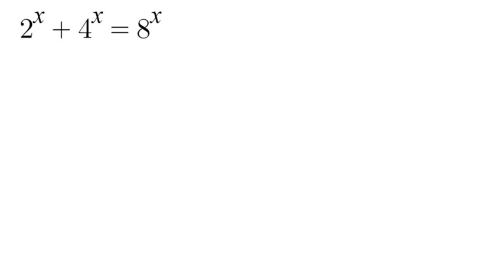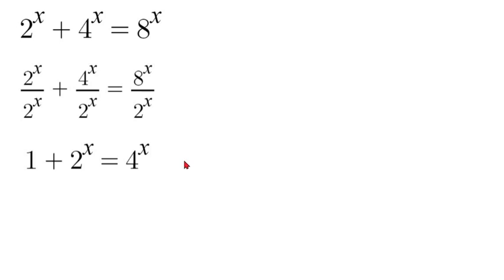The first thing we are going to do is divide the whole equation by 2 to the power of x. That way we can cancel out our 2 to the power of x here and then we will be able to simplify and reduce these two down to 2 to the power of x and 4 to the power of x.